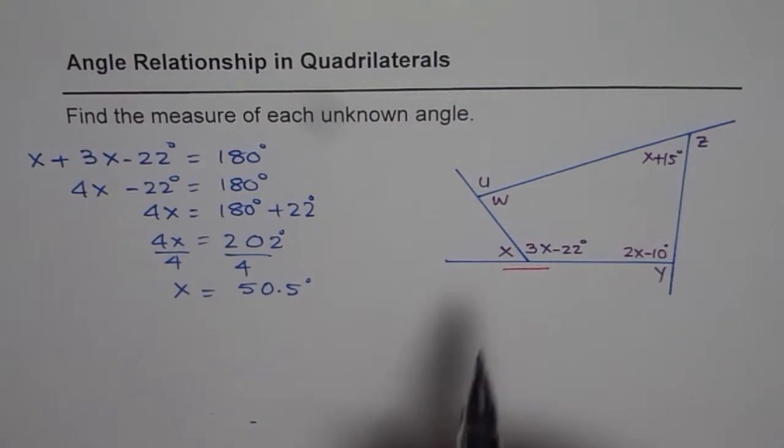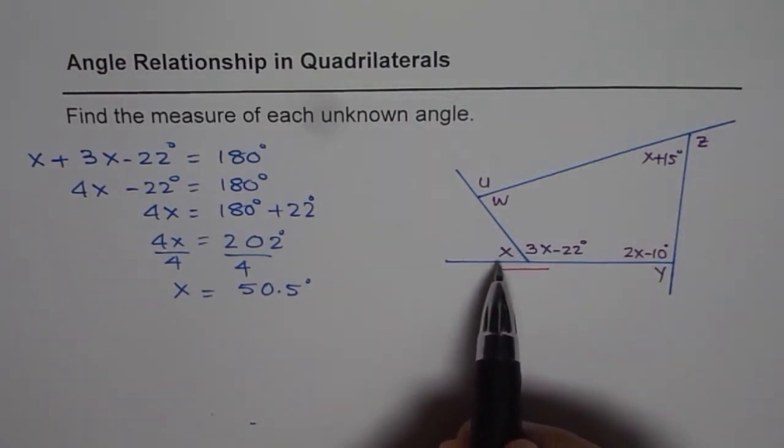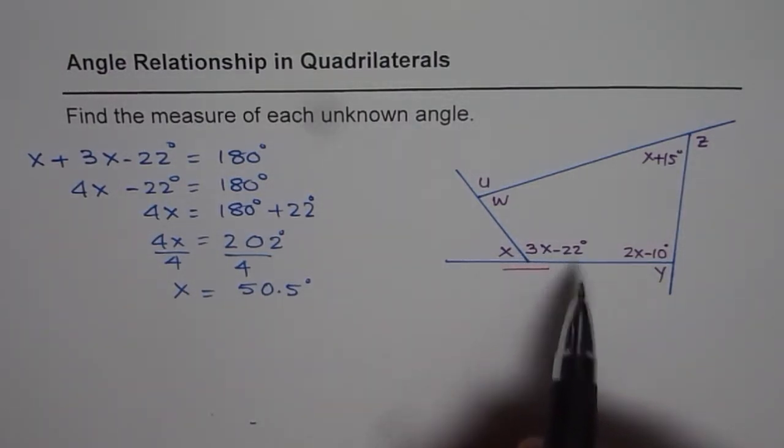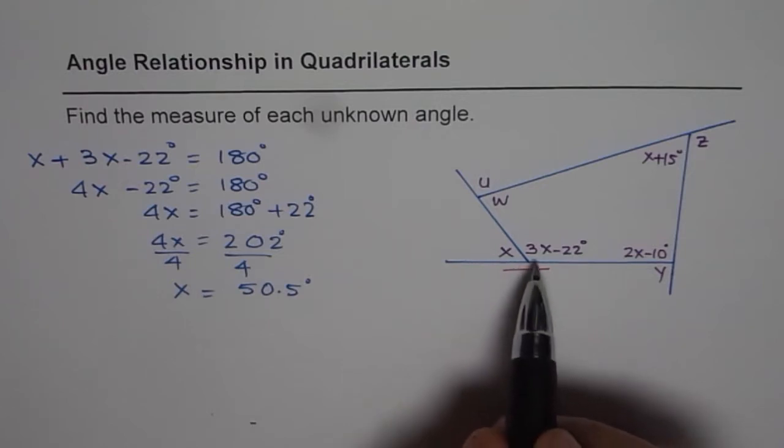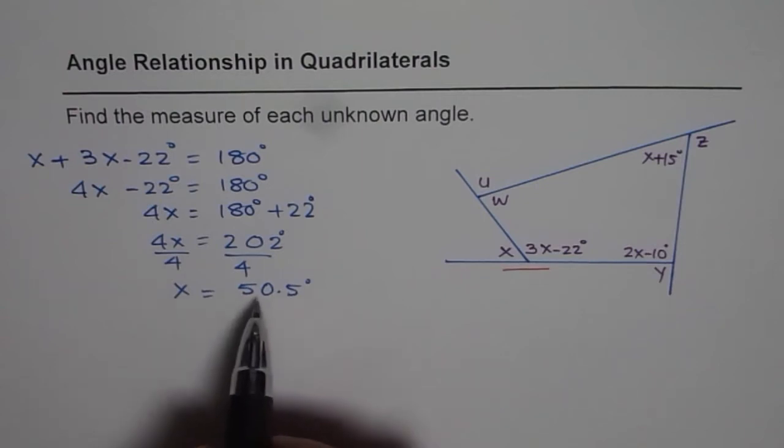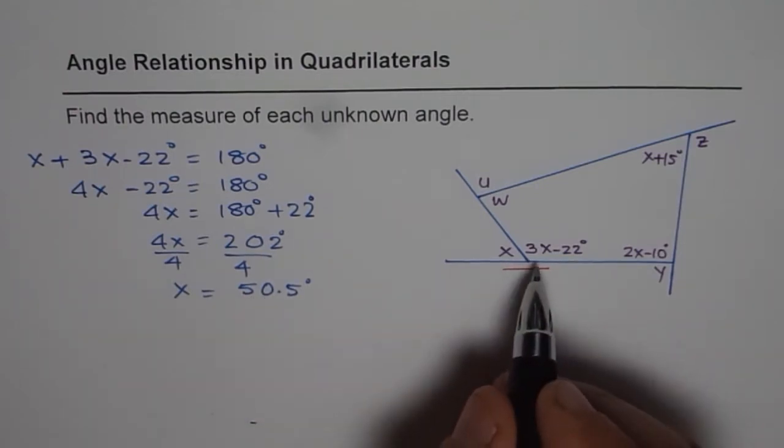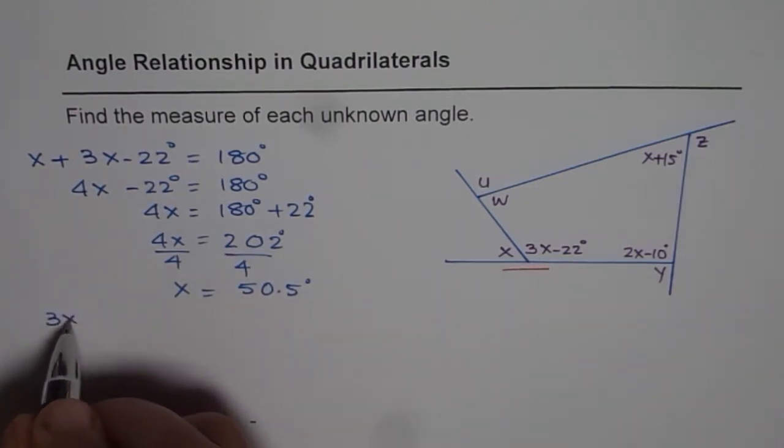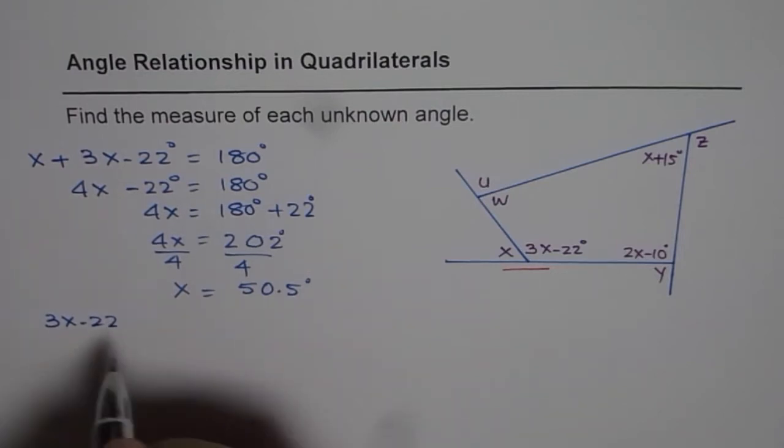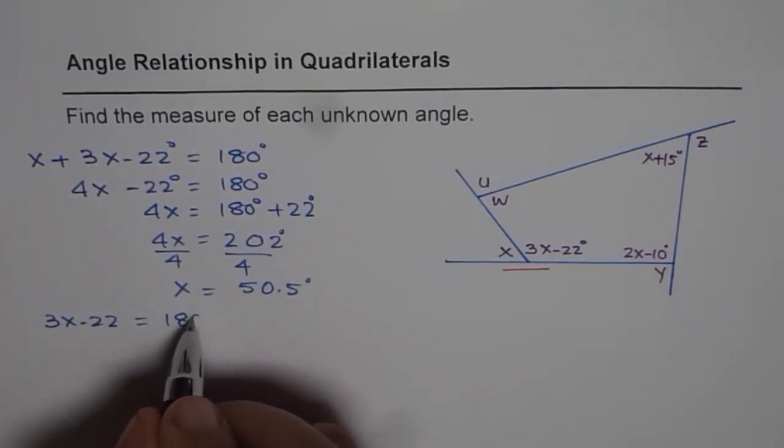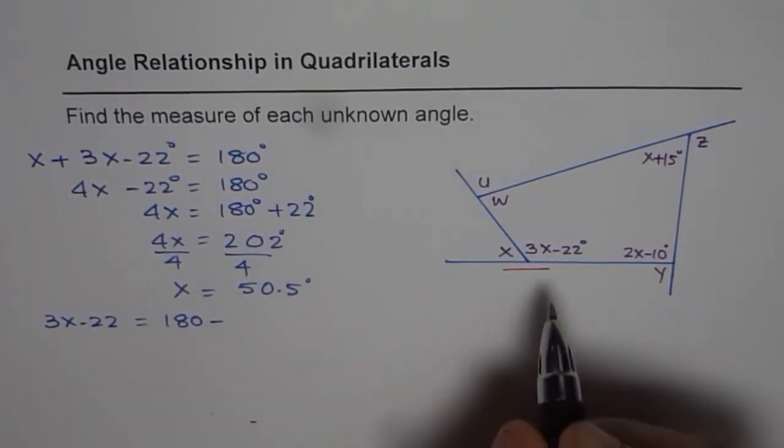So we get x as 50.5 degrees. So that is the value of x. Now once you find x, you're going to find the other angles. So that means 3x minus 22, just substitute the value of x in it. So we find that 3x minus 22 should be equal to 180 minus x.